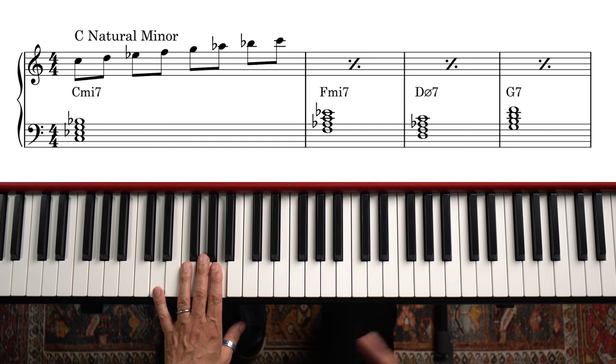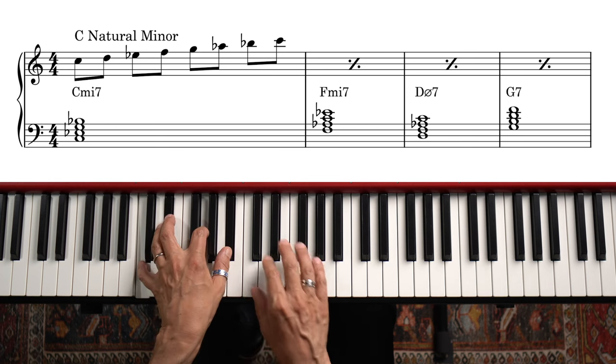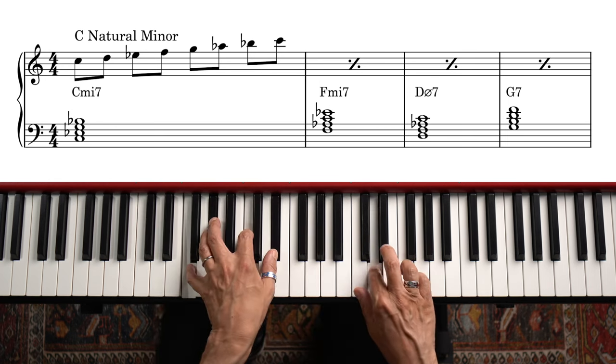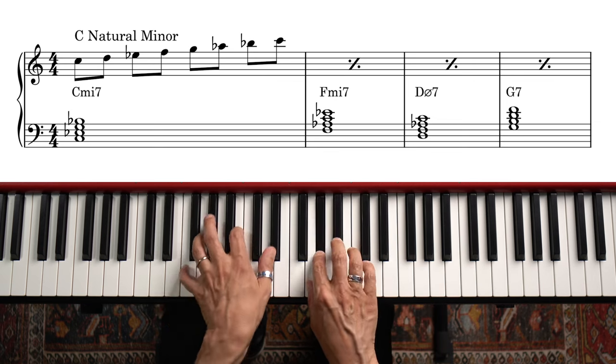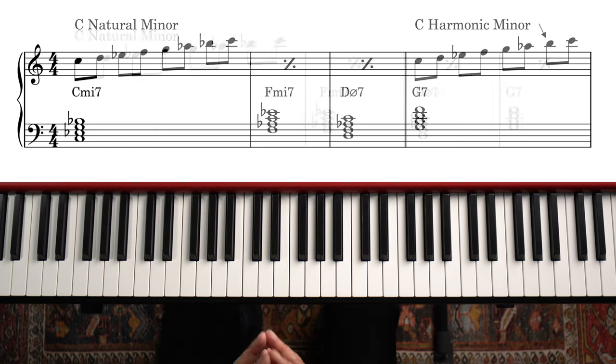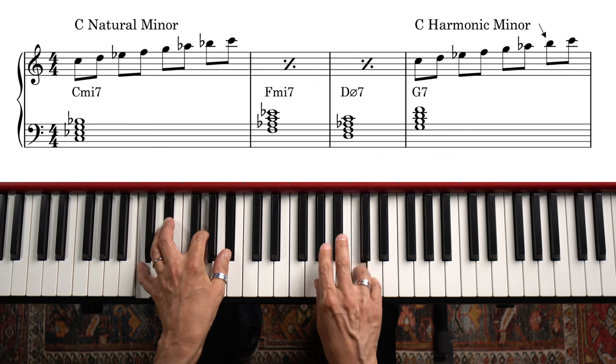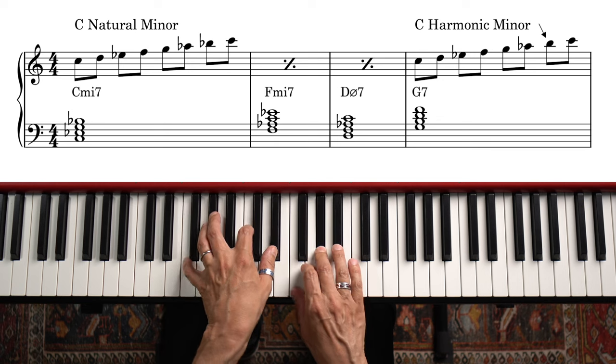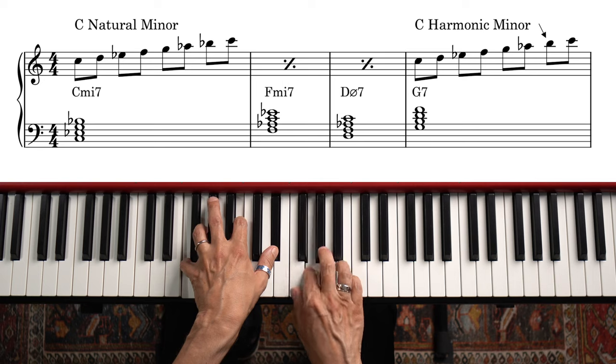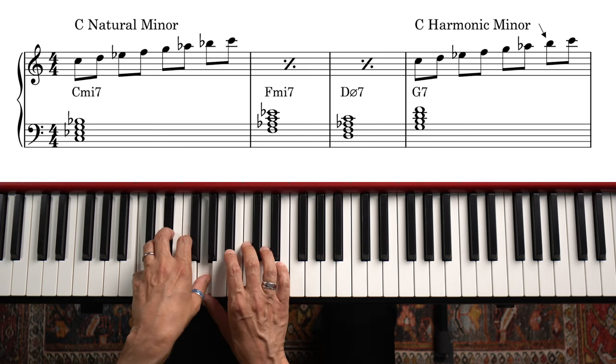We can even extend it to the G7 as long as we don't emphasize the note C. We could also switch to C harmonic minor for the G7 chord because that gives us a B, the third of G7 and a very important note in expressing the G7 sound. This idea of playing with the different tonic minor scales is an extension of the key center approach. It's more complex than just using a single scale, but it still somewhat fits into the key center concept because all the scale options share the same root, in this case C.